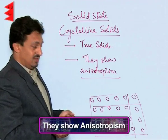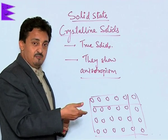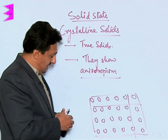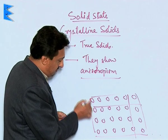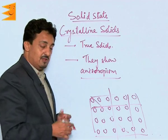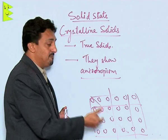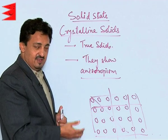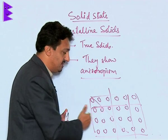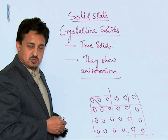Crystalline solids show anisotropism, or they are anisotropic solids. Anisotropism is the tendency of a solid to show the same property with different magnitudes from different sides of the same crystal. The arrangement of particles is not the same diagonally, lengthwise, and breadthwise — it will be different. That is why properties like electrical resistance and refractive index will have different magnitudes from different directions of the same crystal. This property is called anisotropism.